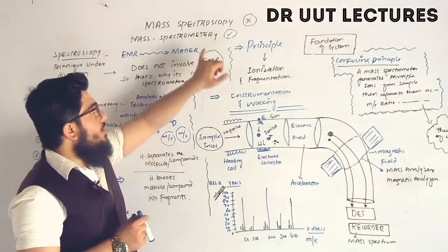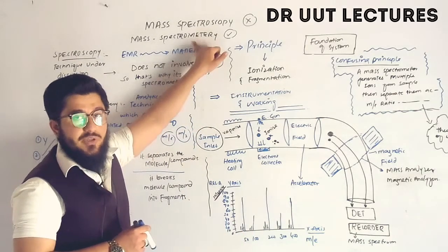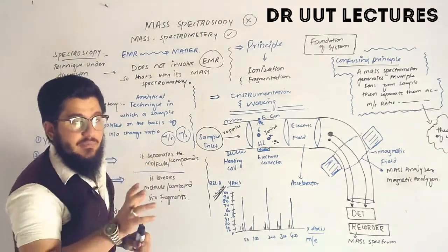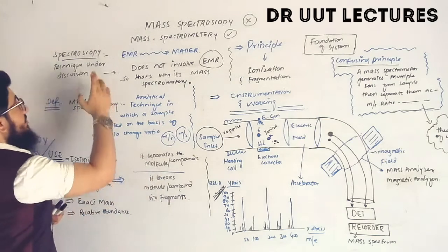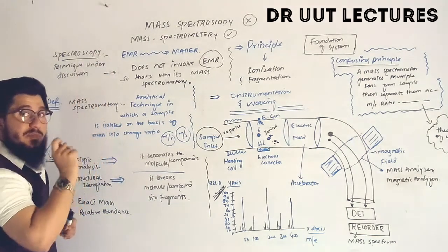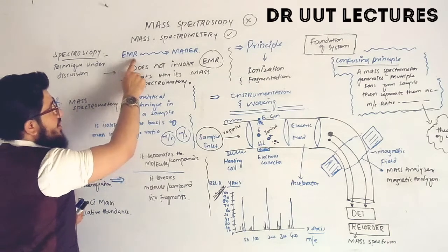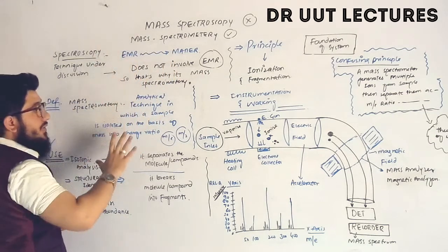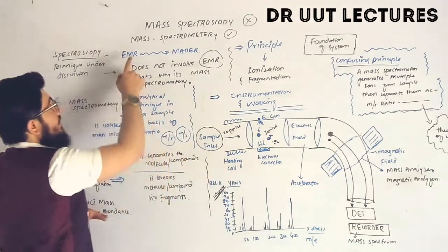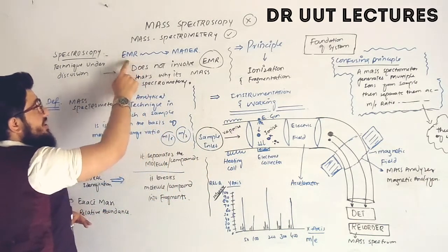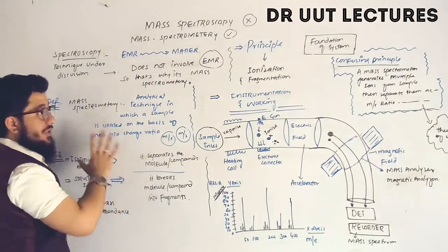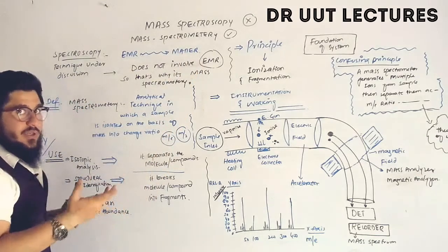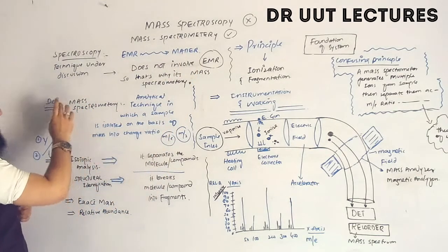In today's lecture we will talk about mass spectrometry — not mass spectroscopy. The logic is simple: spectroscopy is when electromagnetic radiation interacts with matter. Since we will never use electromagnetic radiation in this discussion, this technique is called mass spectrometry.